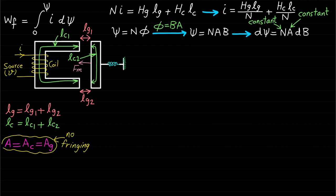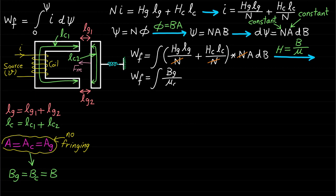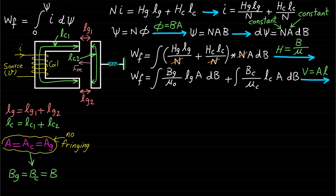In addition, we will assume there is no fringing effect, and therefore the cross-section area of the core is equal to the cross-section area of the air gap. Therefore, the magnetic field density of the air gap Bg is equal to the core magnetic field density Bc, and they are both equal to B. If we substitute the developed current and dψ expressions in the field energy WF equation and perform some simplifications, the following field energy expression can be achieved.